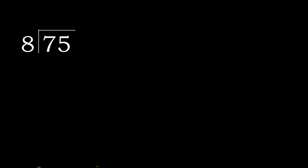75 divided by 8. 7 is less, therefore next. 75 is not less, therefore 8 multiplied by which number is nearest to 75 but not greater. 8 multiplied by 9 is 72, which is not greater. 75 minus 72 is 3.